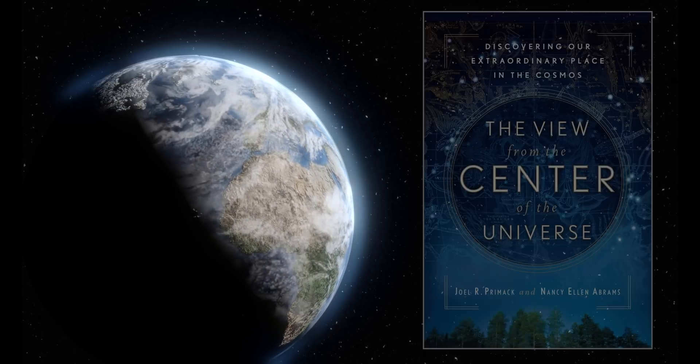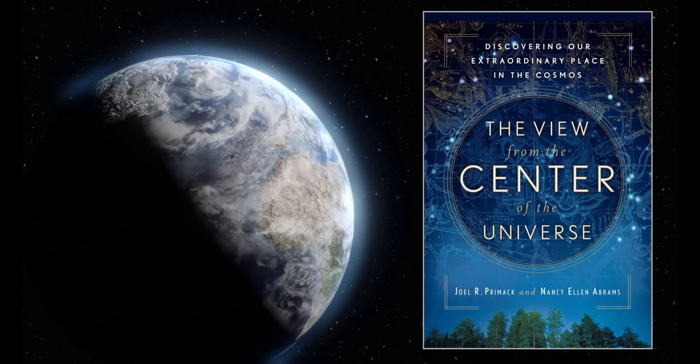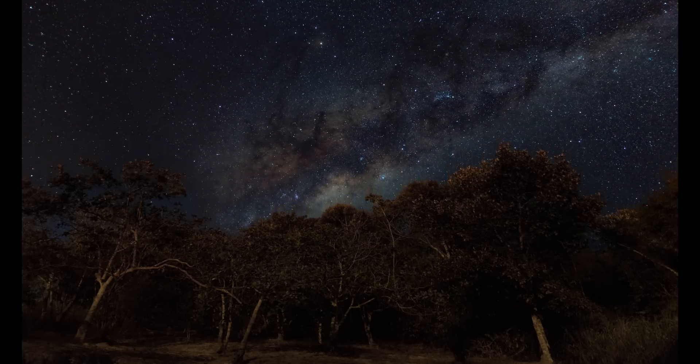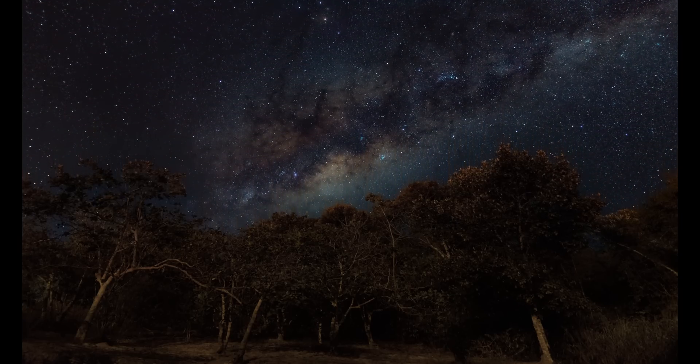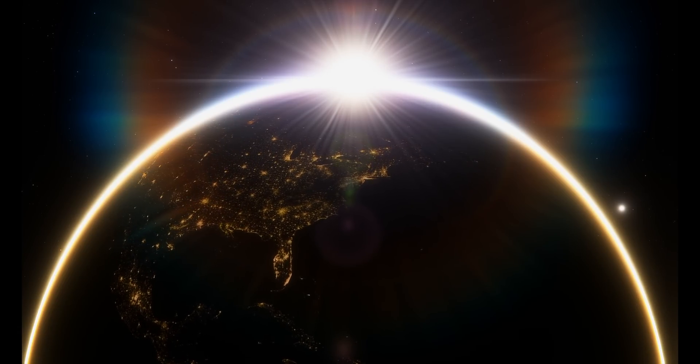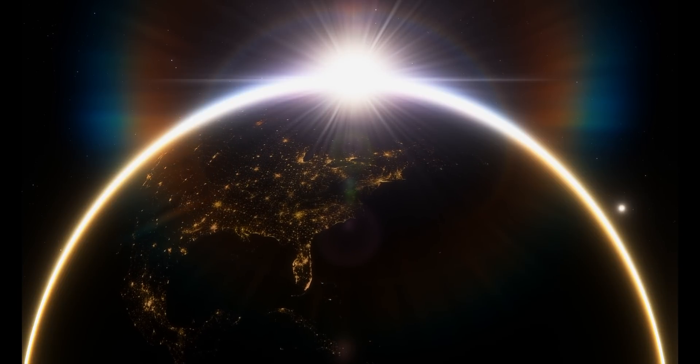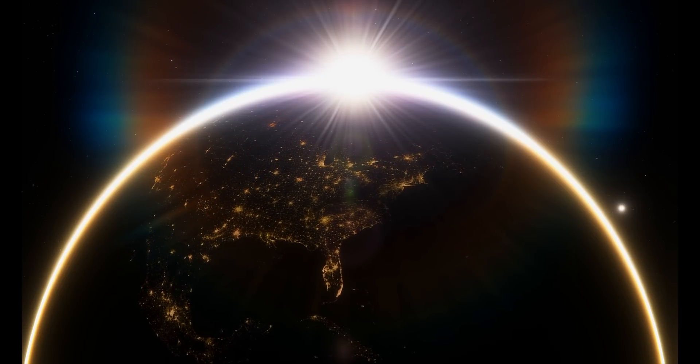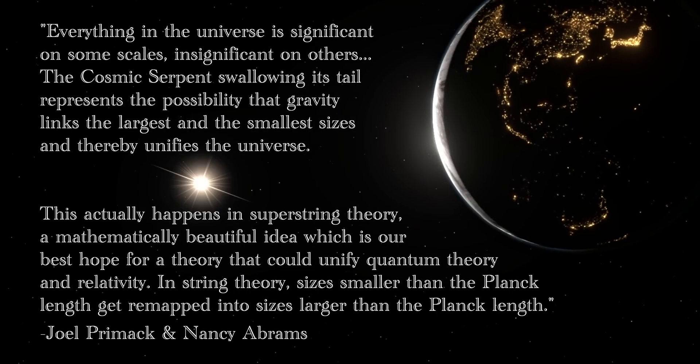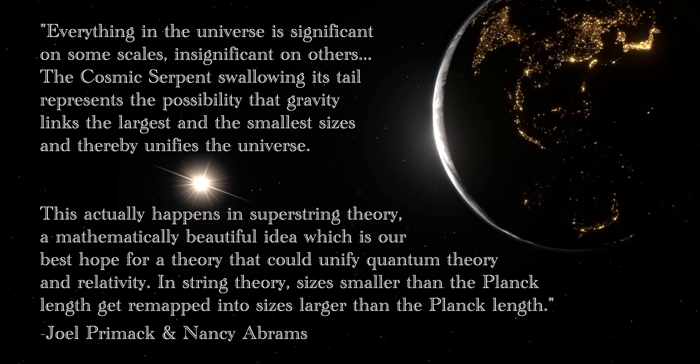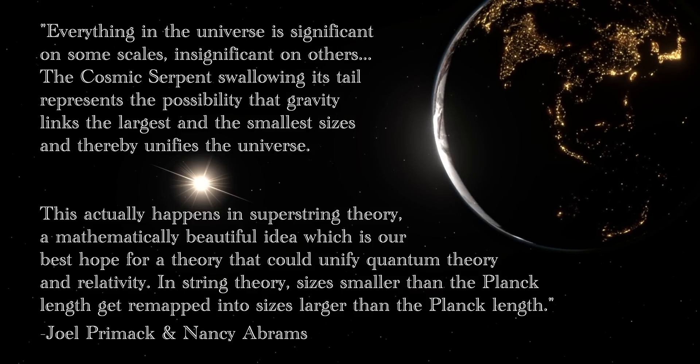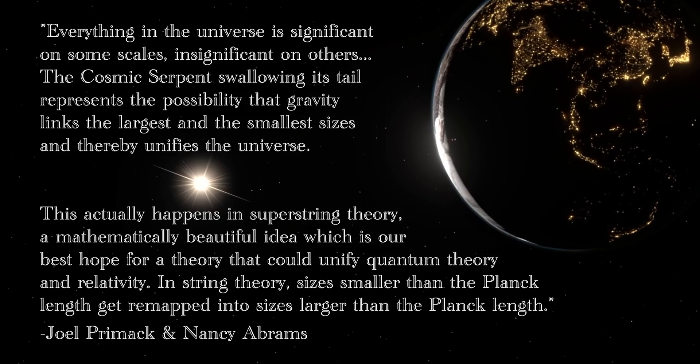From the primary source of this video, the view from the center of the universe by Nancy Abrams and Joel Primack, everything in the universe is significant on some scales, insignificant on others. The cosmic serpent swallowing its tail represents the possibility that gravity links the largest and the smallest sizes and thereby unifies the universe. This actually happens in superstring theory, a mathematically beautiful idea which is our best hope for a theory that could unify quantum theory and relativity. In string theory, sizes smaller than the Planck length get remapped into sizes larger than the Planck length.